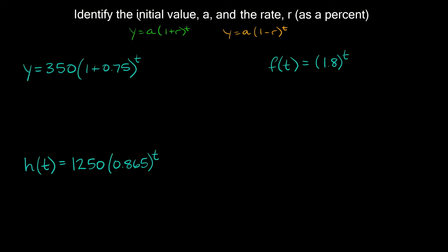The last few problems ask you to identify the initial value a and the rate r as a percent. For y = 350 × (1 + 0.75)^t: this is exponential growth because of the plus sign and the factor is bigger than one. Here a = 350, and r = 0.75. Converting to a percent: 0.75 × 100 = 75%.